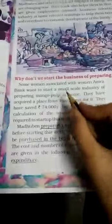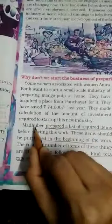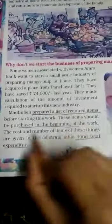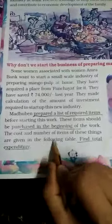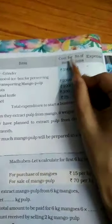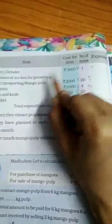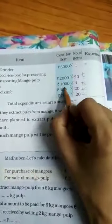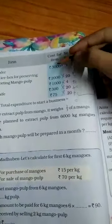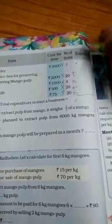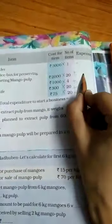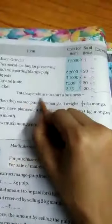Now, why don't we start the business of preparing mango pulp? Madhuban prepares a list of required items for mango pulp. These items are purchased in the beginning. The cost and numbers are given in the following table — find the total expenditure. The table has columns: item, cost per item, number of items, and expense. Multiply cost per item by number of items to get total expense. For example, Rs. 3,000 multiplied by one, Rs. 2,000 multiplied by its quantity, and so on. Add all these to get the total expenditure to start the business.